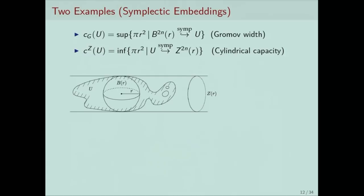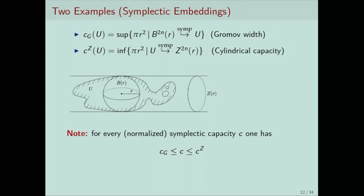Let's see two important examples. The first is the Gromov width: we measure the size of a set by asking what is the largest ball we can symplectically embed inside the set. The cylindrical capacity is the opposite question: given a set, we find the smallest cylinder such that we can embed our set inside the cylinder. It follows from the non-squeezing theorem that these two quantities are indeed symplectic capacities, and every normalized symplectic capacity lies in between these two — the Gromov width is the smallest and the cylindrical capacity the largest.